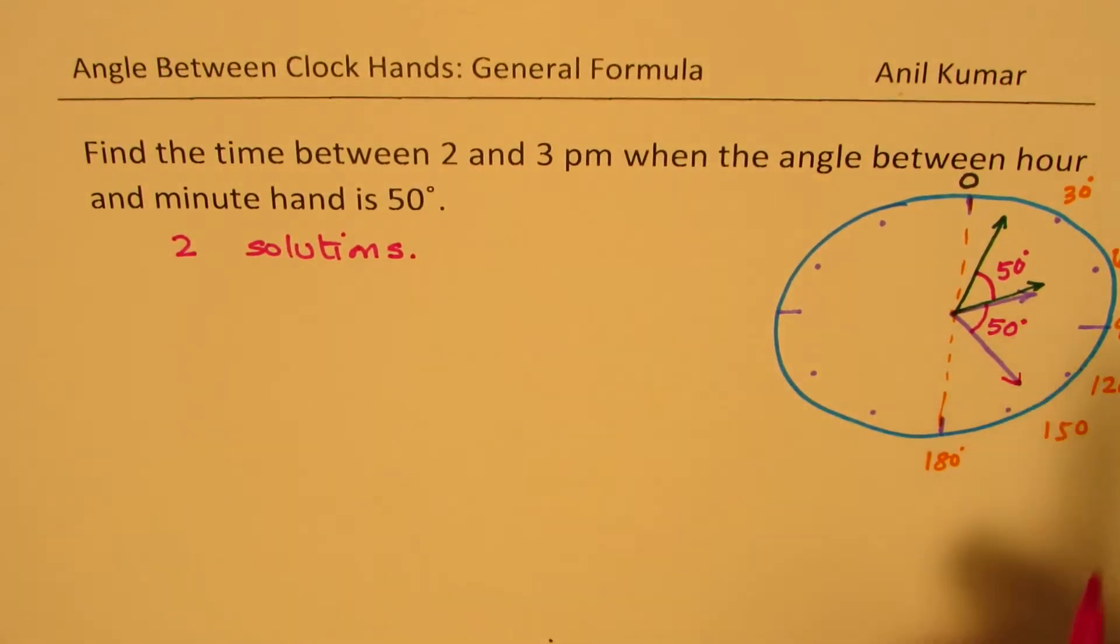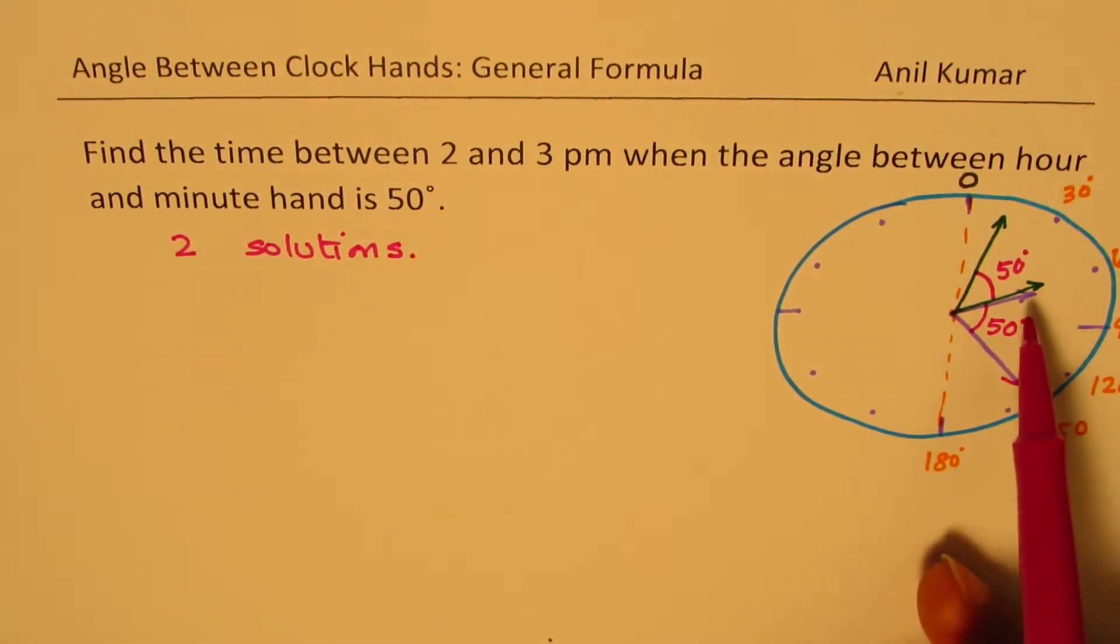So when we say that the angle is 50 degrees, we are actually looking for two solutions. In one case, the hour hand is beyond the minute's hand. In the other case, the minute's hand is beyond the hour hand. You get an idea, correct?